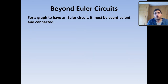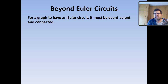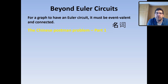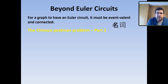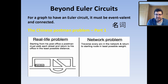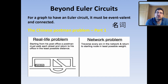What do we do if the graph doesn't have an Euler circuit? For a graph to have an Euler circuit it must be even-valent and connected. This is called the Chinese postman problem in general — not one problem but a class of problems with the same underlying structure. On the left you have the real-life problem: the postman, starting from his post office, must walk each street and return to his post office in the least possible distance. That real-life problem is then changed into a network problem.